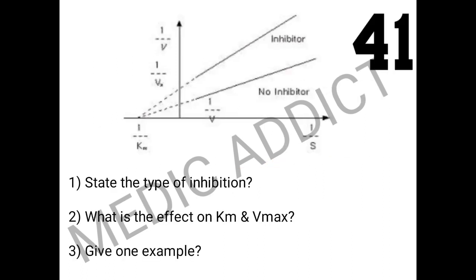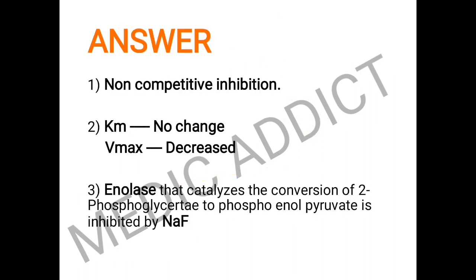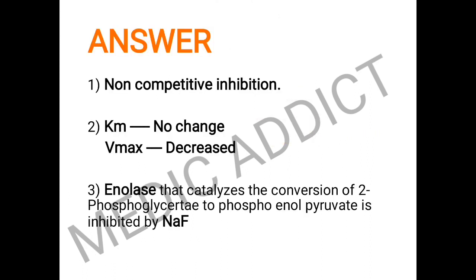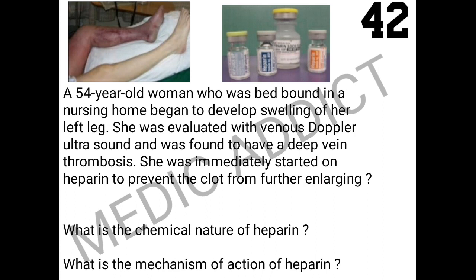Moving to the next spot: a graphical presentation is given, and we must state the type of inhibition, the effect on Km and Vmax, and give an example. The key is to look at the Km and Vmax values. Here, Km has no change but Vmax is decreased, so this is an example of non-competitive inhibition. An example is the enzyme enolase, which catalyzes the conversion of 2-phosphoglycerate to phosphoenolpyruvate and is inhibited by sodium fluoride — this is used in the collection of blood samples.